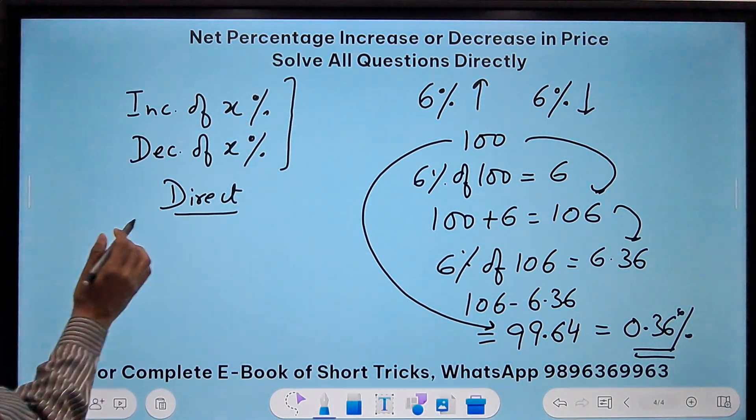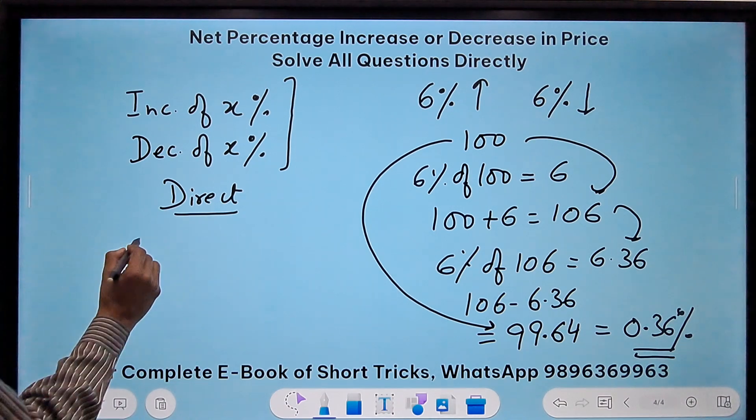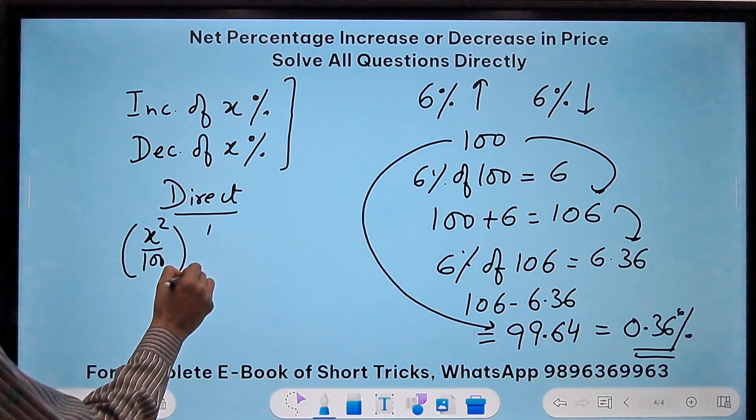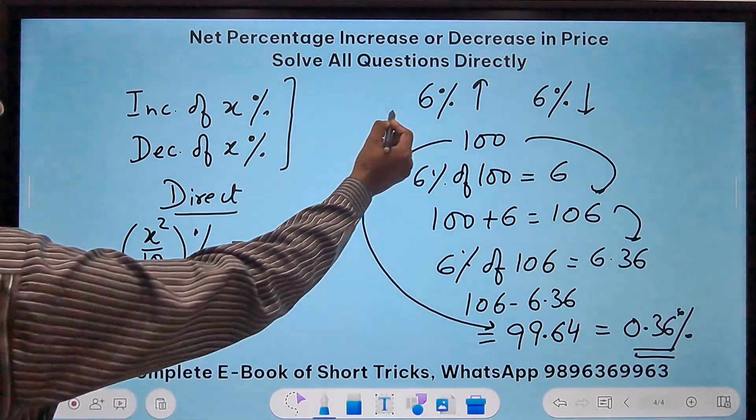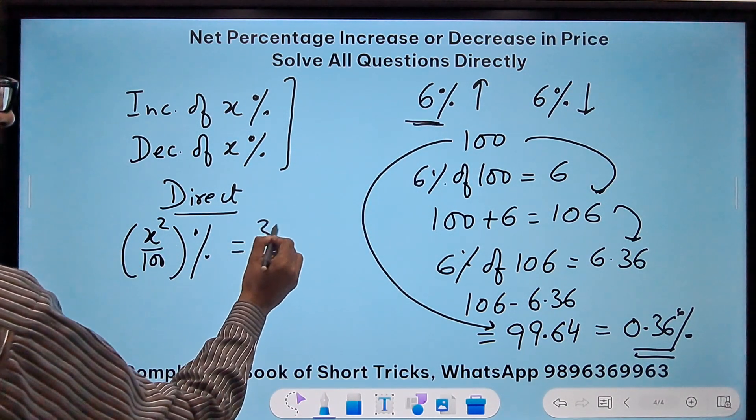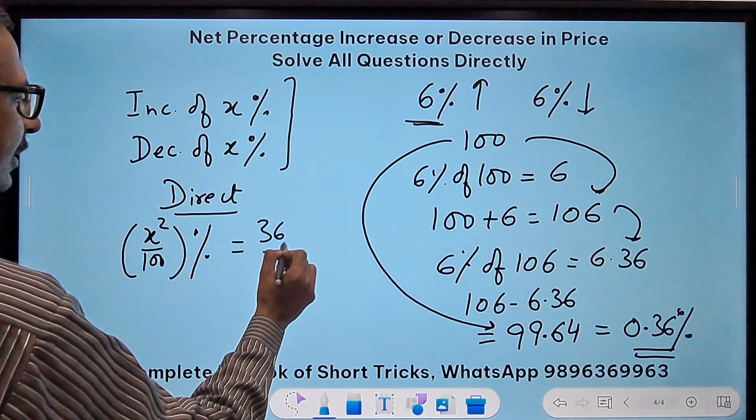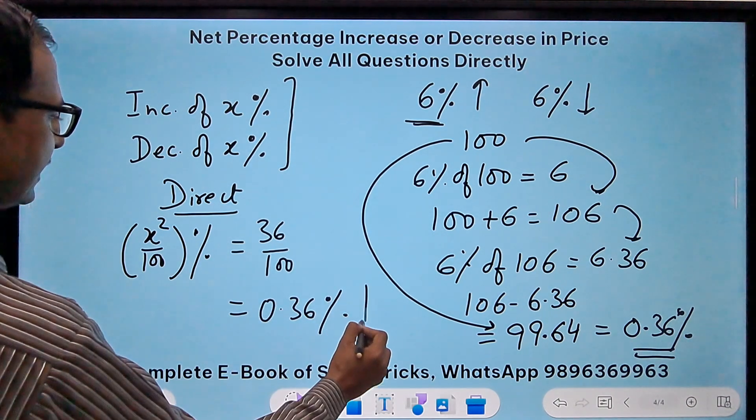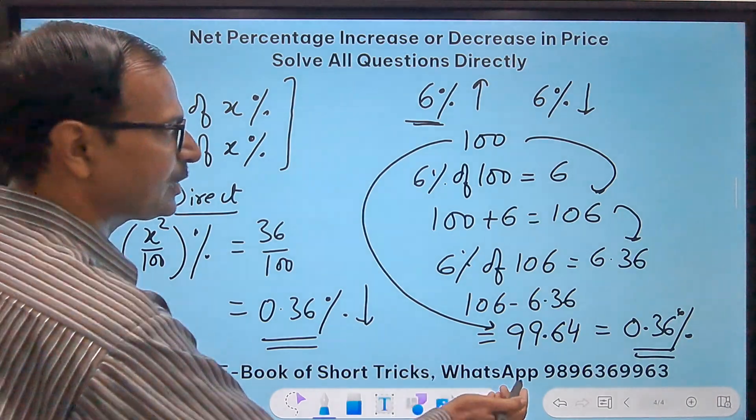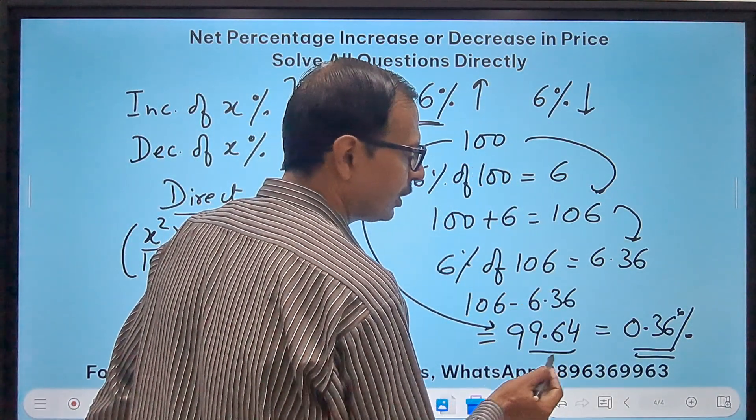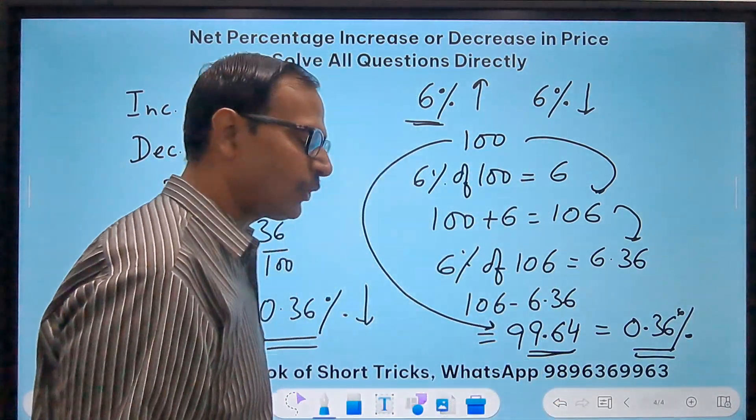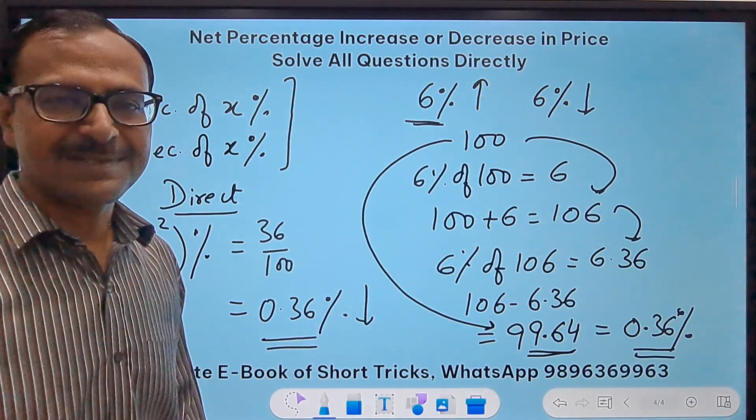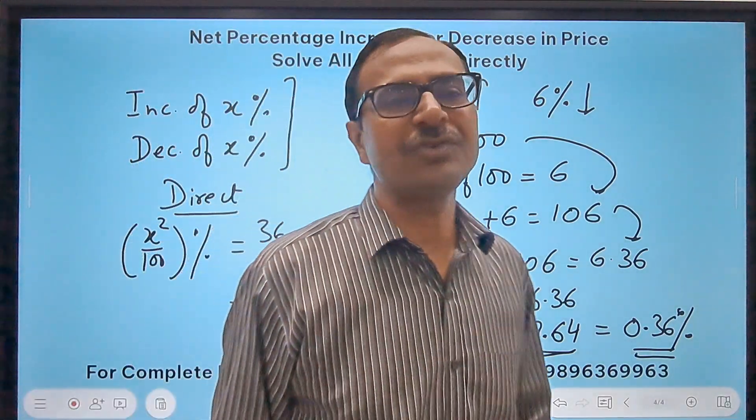Now watch. If I have to do it directly, I will do x square upon 100 percent, that's it. So what is x? X is 6 here. So 6 square, 36 upon 100, that is 0.36 percent, again decrease in the value. Why decrease? Because 100 became 99.64, so it decreased. Therefore net percentage decrease is 0.36 percent.